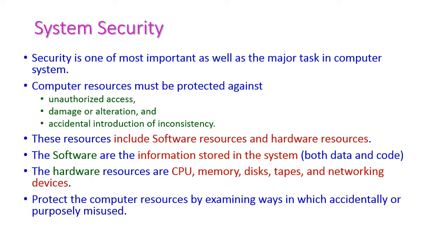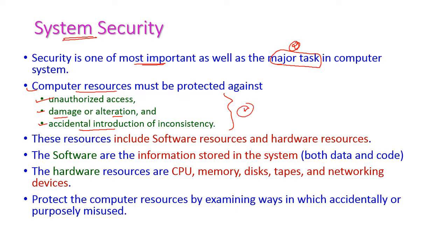System security is nothing but computer system security, and it is one of the most important and major tasks in the computer system. We have to protect our resources. The computer resources must be protected against unauthorized access, damage or alteration of resources, and accidental introduction of inconsistency. We have to protect both software resources as well as hardware resources.